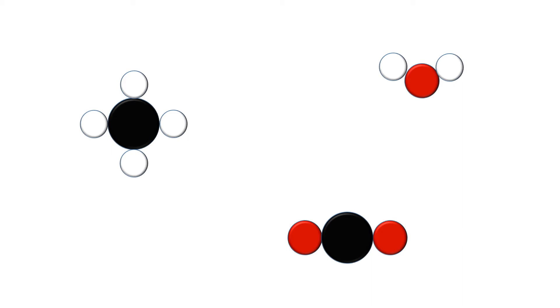Compounds contain two or more elements that are chemically combined in fixed proportions, and they can be represented by formulae using the symbols of the atoms from which they were formed. Compounds can only be separated into elements by chemical reactions.